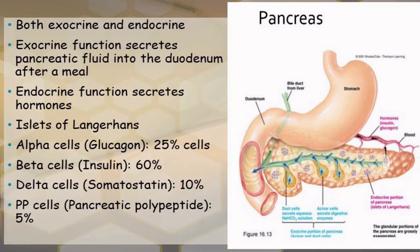The acinar cells secrete the digestive enzymes. So the duct cells and the acinar cells together constitute the exocrine portion of the pancreas. At the same time, the pancreas has the endocrine portion called the islets of Langerhans, which appear as a small flower-like arrangement of cells. The endocrine cells or the islets of Langerhans include alpha cells, beta cells, delta cells, and PP cells.